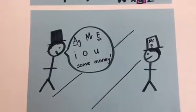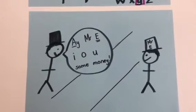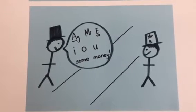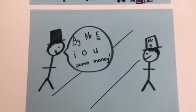A, Mr. E, I owe you some money. Those are your five vowels: A, E, I owe you.